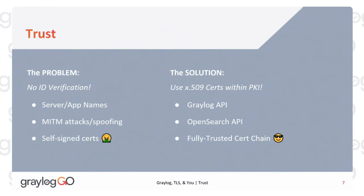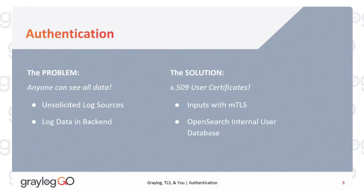You can encrypt the Graylog API — which is also the web interface — and the OpenSearch API. With this, you have a fully trusted certificate chain using either your internal CA, which a lot of people do, or something public. We have log sources that are sending in and are not authenticated — any log source can send in to an open port, so we definitely want to address that.